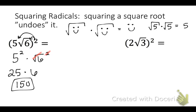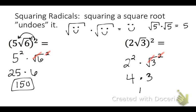For the next problem, we have 2 squared times square root 3 squared. 2 squared is 4, and square root 3 squared is just 3 because the square root and square undo each other. 4 times 3 is 12. Notice there are no square roots left in these answers — since we're squaring, the square roots go away. You should never have a square root left in a problem like this.